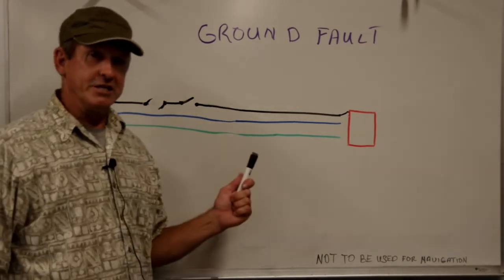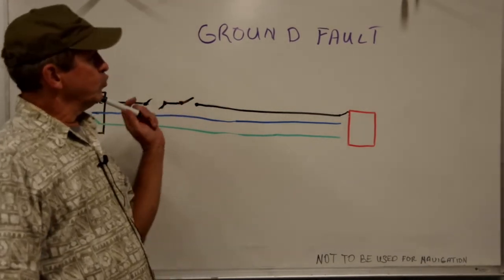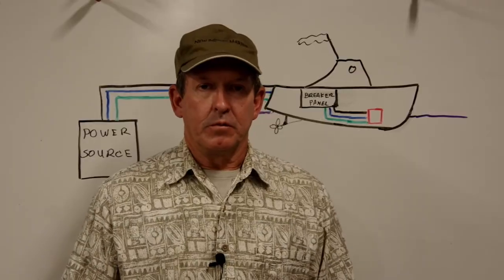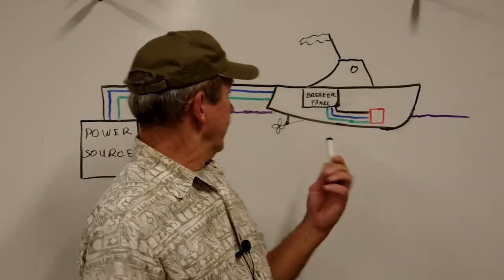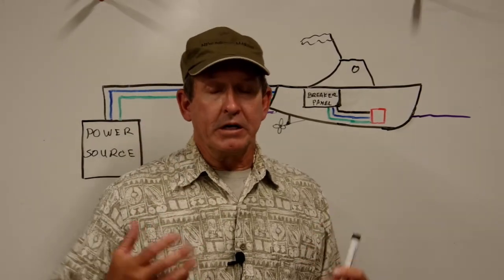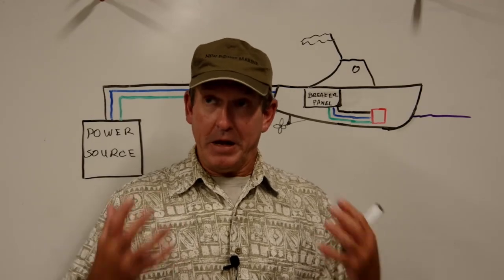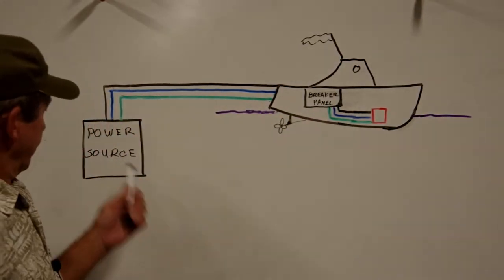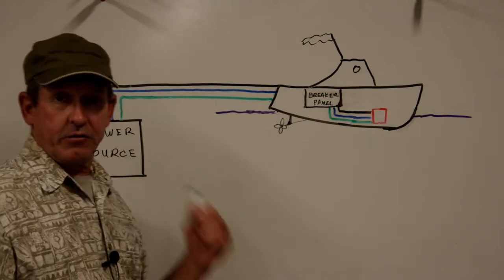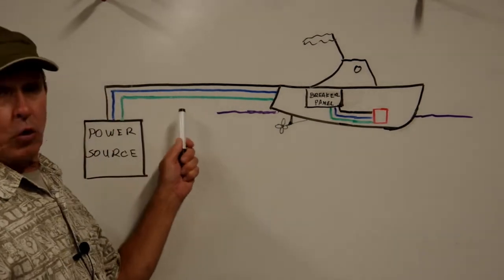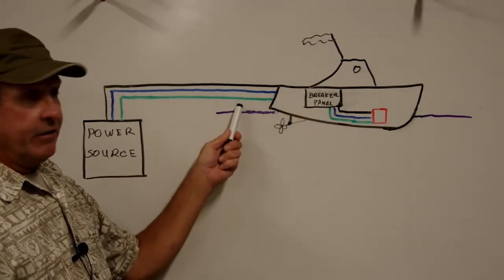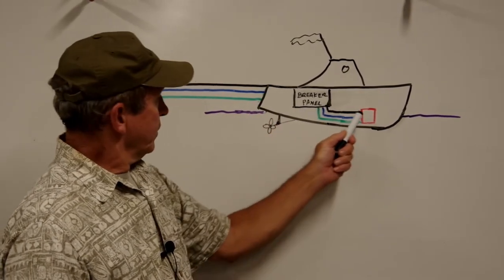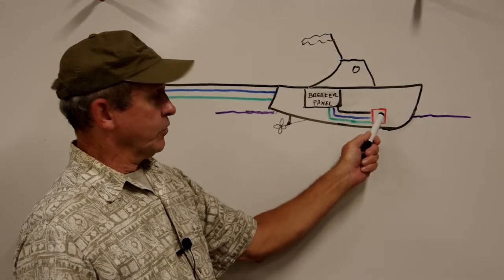Give me a minute to clean the board — I'm going to draw in a boat with a ground fault and show you why that is such a big deal. In our example, we have our source of power — more than likely the big transformer in the marina. We've got our shore cord plugged into our boat with line, neutral, and AC safety ground — our 30-amp shore cord. That goes into our boat, our breaker panel, and we have a circuit with line, neutral, and AC safety ground going to our appliance.